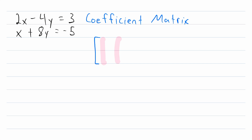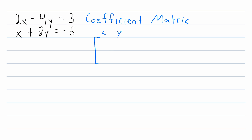This matrix will have one column for each variable in our system — in this case one column for x and one column for y — and then we'll have one row for each equation in the system, so that's two rows in this case. In the first row, first column goes the coefficient of x in the first equation, that is 2. Then in the first row, second column, we have the coefficient of y in the first equation, which is negative 4.